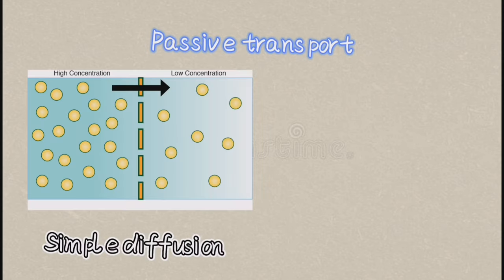Substances can move across the plasma membrane through two types of transport: passive transport and active transport. Passive transport does not involve the use of energy. There are three types: simple diffusion — movement from high to low concentration through the phospholipid bilayer down the concentration gradient until equilibrium; and osmosis — movement of water molecules from an area of high water potential to low water potential through a semi-permeable membrane.